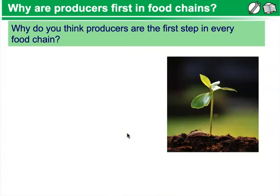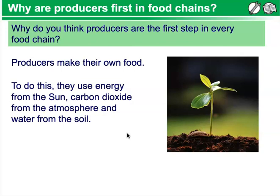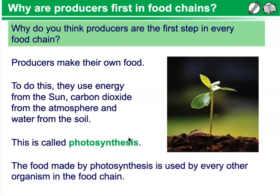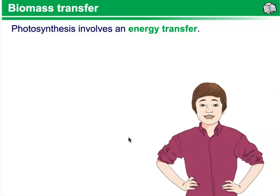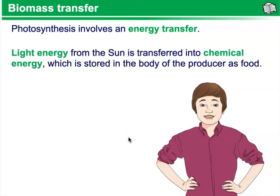Why are producers first in food chains? Producers are the first step in every food chain because they make their own food. To do this, they use the energy from the sun, carbon dioxide from the atmosphere, and water from the soil — this process is called photosynthesis. The food made by photosynthesis is used by every other organism in the food chain. Photosynthesis involves an energy transfer: light energy from the sun is transferred into chemical energy, which is stored in the body of the producer as glucose.